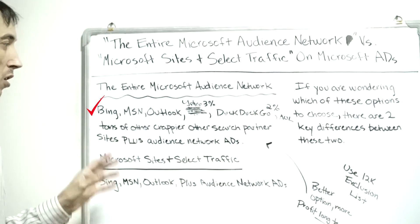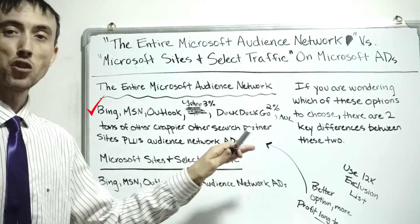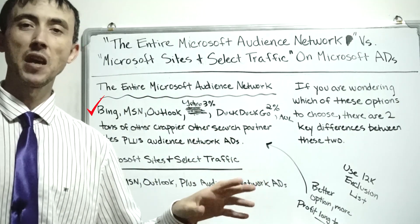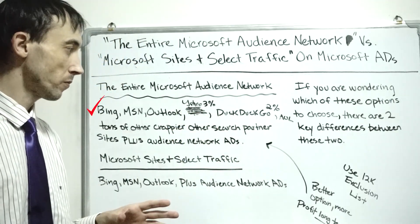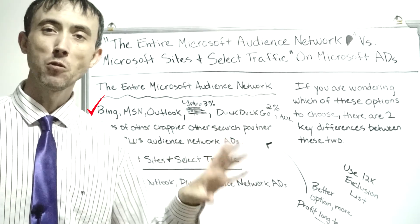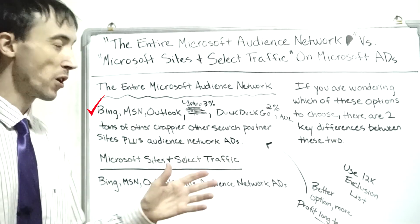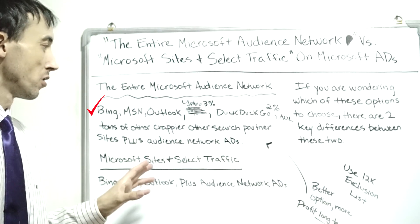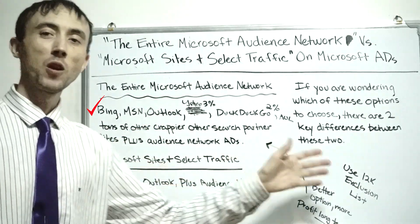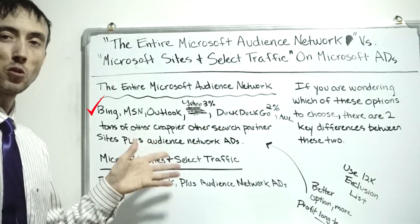As a side note, either option you choose will include audience network display ads showing up on other websites. I made a video about 15 videos ago that gives you a 12,000-placement exclusion list you can apply to your campaigns that will immediately get rid of 99.9 percent of your audience network clicks, which usually burns up 20 to 30 percent of your budget. Once you apply that to your negative placement exclusion list on your account, you'll see a 20 to 30 percent better return — which more than covers any potential short-term loss from going with the broader network option.